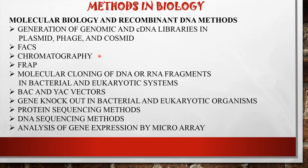Also focus on the advantages of two-dimensional gel electrophoresis over single-dimension gel electrophoresis and why isoelectric focusing is important. Next will be FRAP — fluorescence recovery after photobleaching — molecular cloning of DNA or RNA fragments in bacterial or eukaryotic systems, BAC or YAC vectors, gene knockout in bacterial and eukaryotic organisms, protein sequencing methods, DNA sequencing methods like differences between Illumina sequencing and Sanger sequencing, all types of next-generation sequencing methods, and analysis of gene expression by microarray.